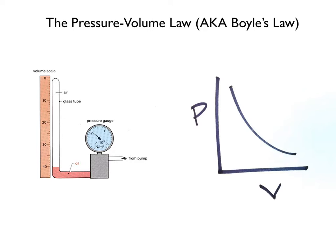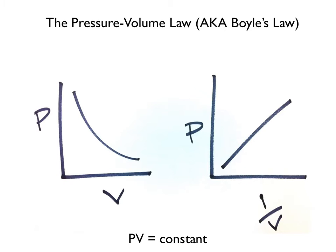But there are a lot of curved functions. How can we be sure this is really an inverse relationship? One way to tell is to take the reciprocal of all of our volume readings and then plot pressure versus the reciprocal of volume. If our graph is now linear, we can be reasonably sure that there is an inverse relationship between pressure and volume. We call this relationship Boyle's law.